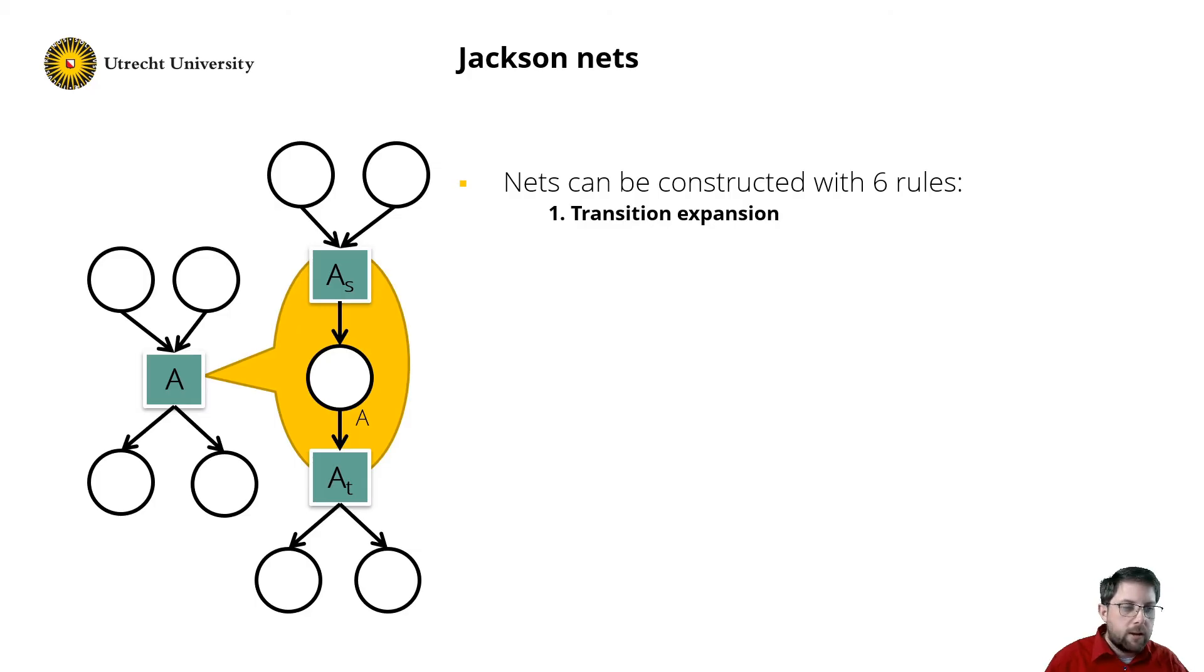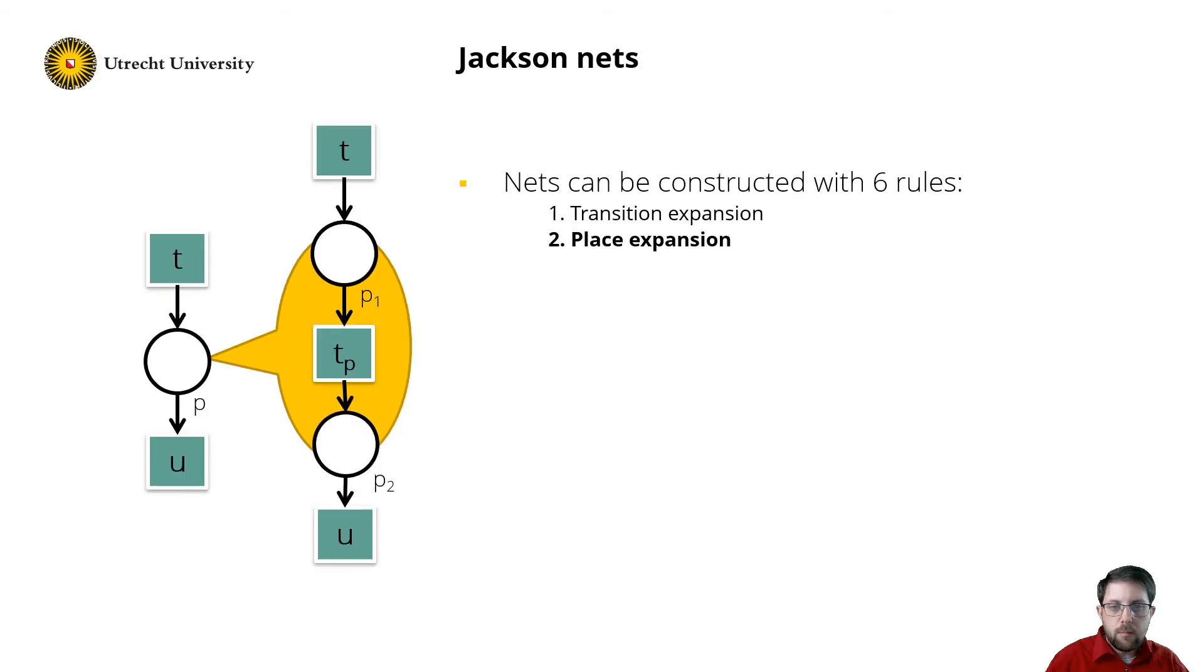The second rule is similar as the previous, but then for places. So we cut the place into two parts, and place the transition in between. So in a similar way you can read this as, I have tokens received, I inspect the token, and I release the token to place P2.